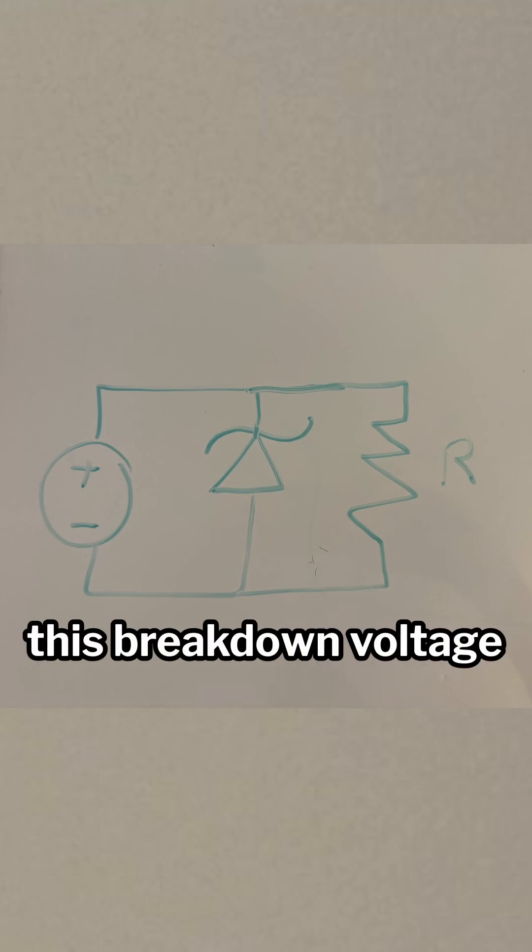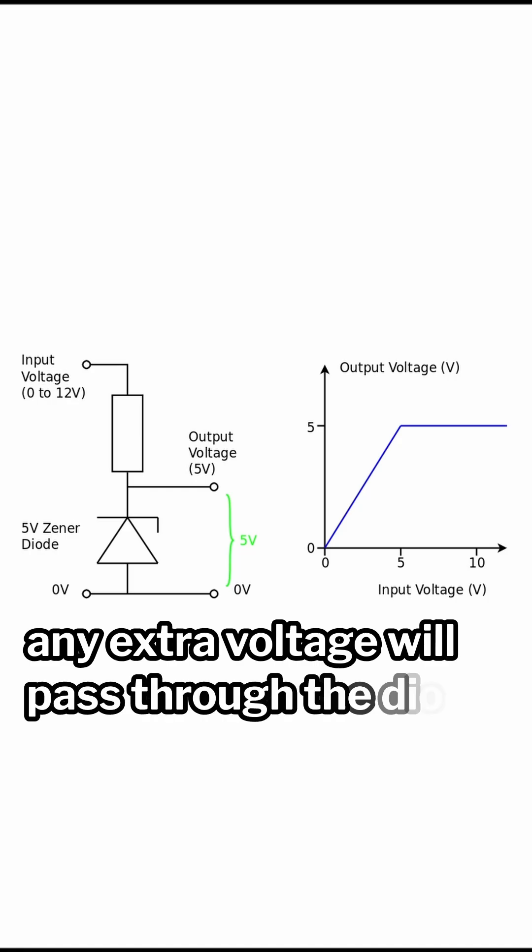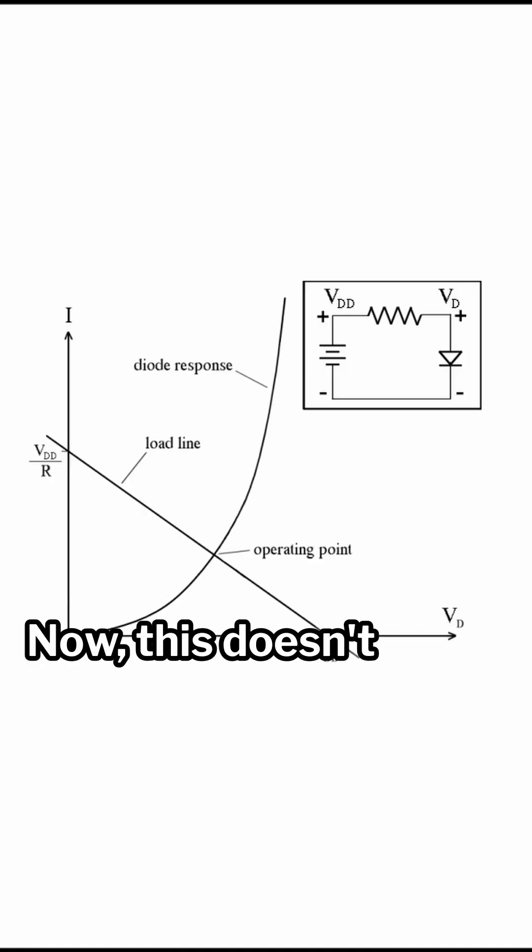But for Zener diodes, this breakdown voltage allows you to use it as a voltage regulator. This is because when used in this configuration, any extra voltage will pass through the diode and be pulled to zero volts.